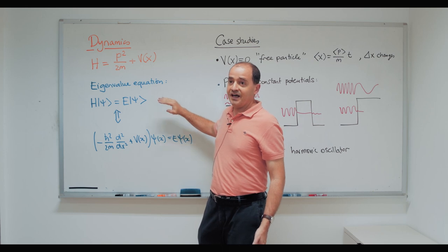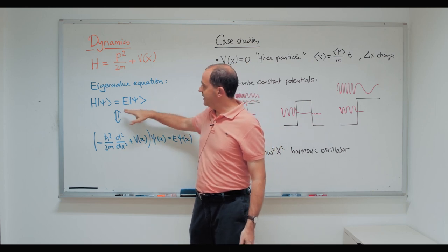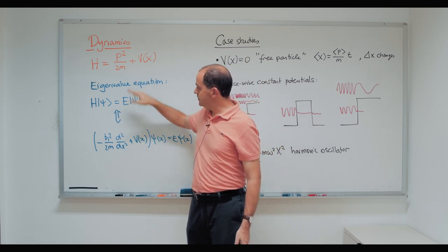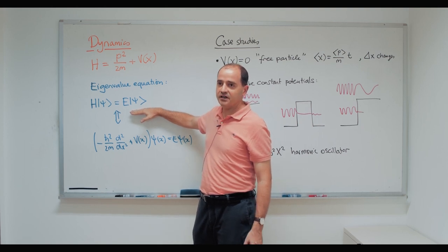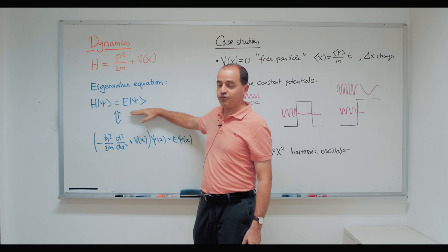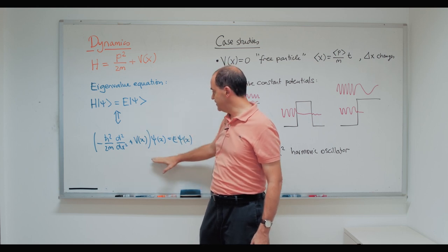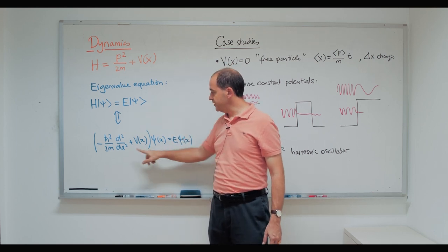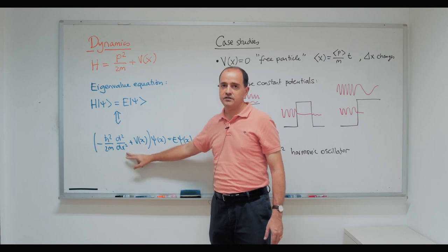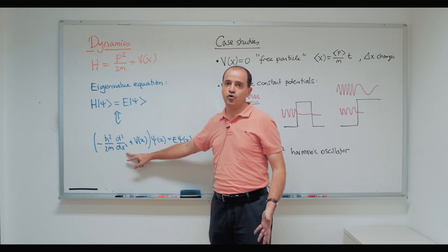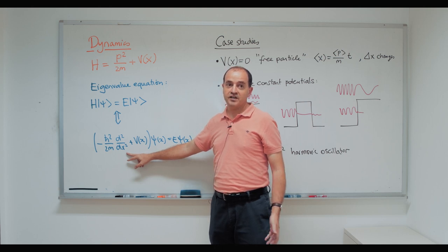We are going to have to solve the eigenvalue equation — that is, find the eigenstates of this Hamiltonian. In the abstract algebraic formulation, if you go to the wave function representation, this equation looks like a second-order differential equation in x. This is not always easy to solve, and that's why the Schrödinger equation for material points in general cannot be solved analytically.